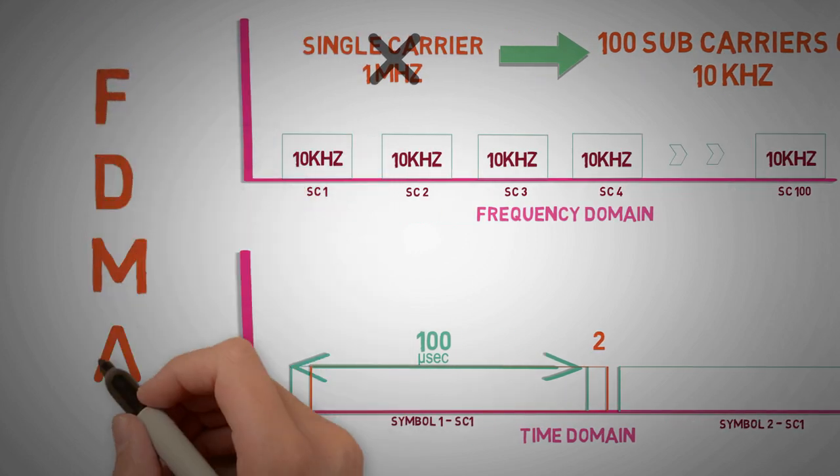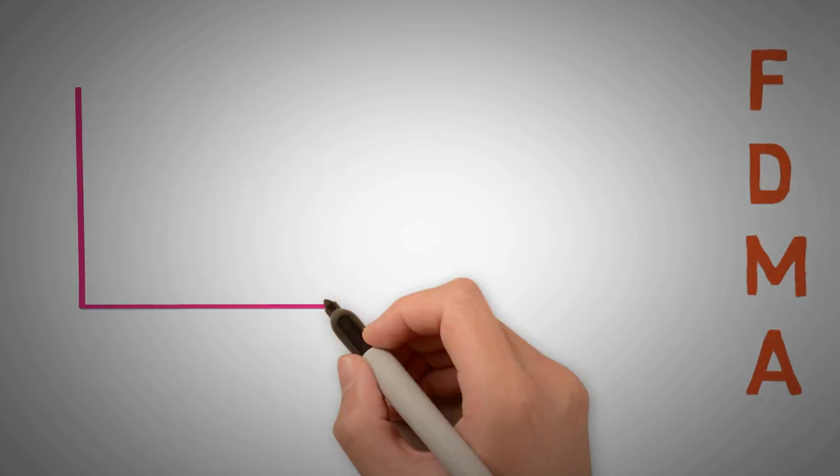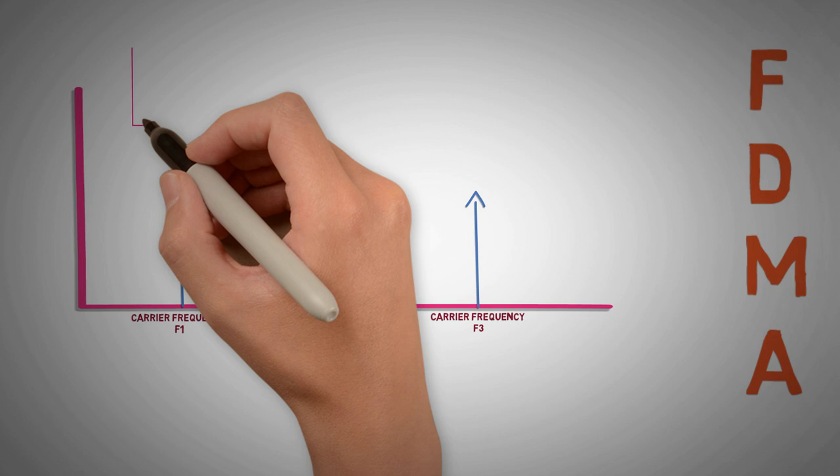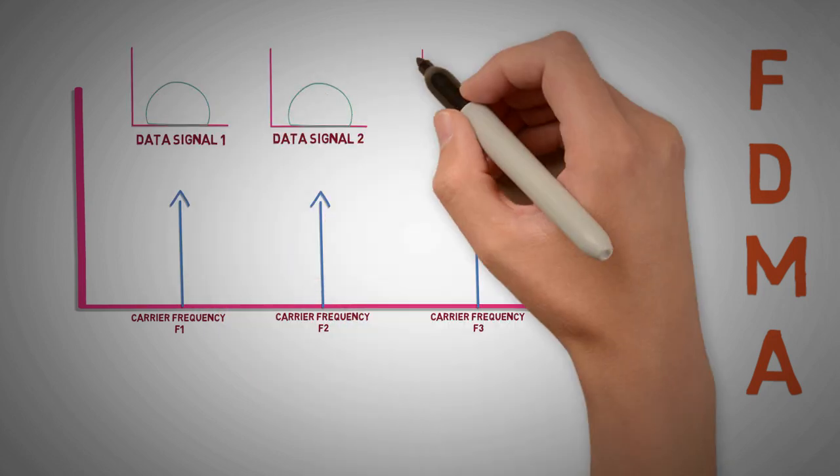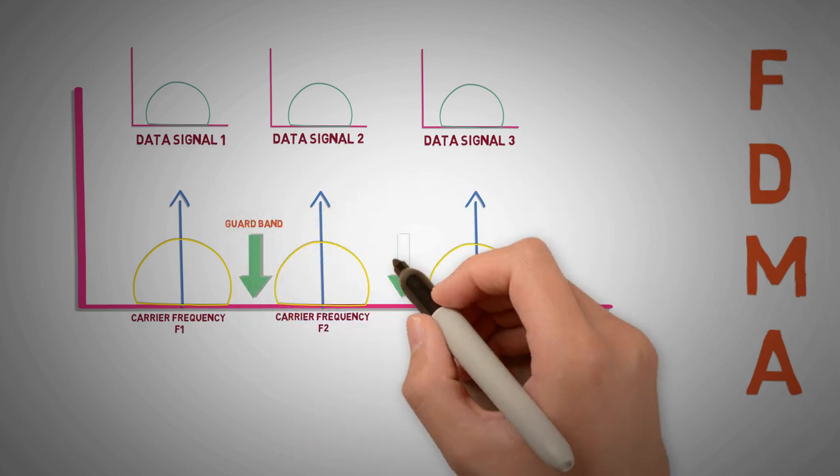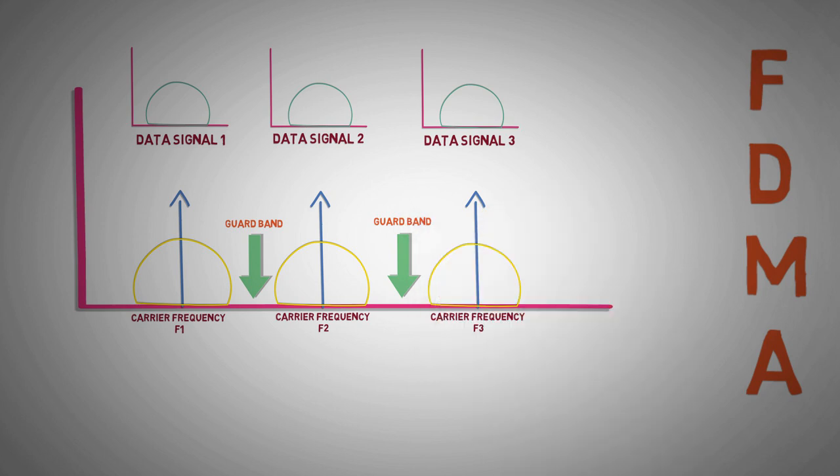This concept is used in FDMA, which uses slowly modulating sub-carriers of higher symbol duration. As these sub-carriers are modulated with data, they gain bandwidth centered around the sub-carrier's frequencies. Guard bands are used to separate them in frequency domain.